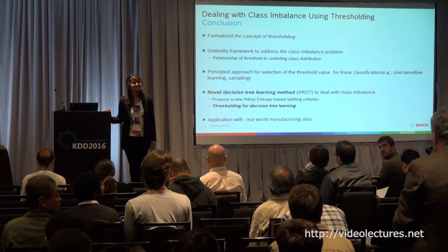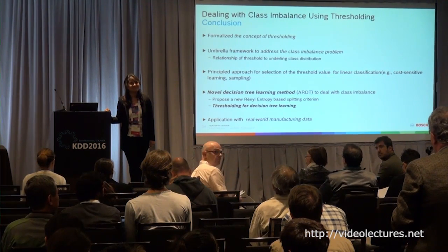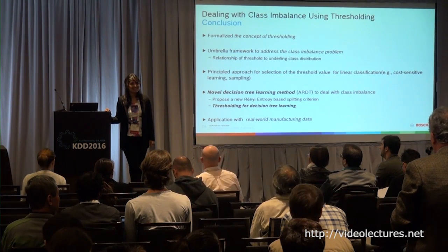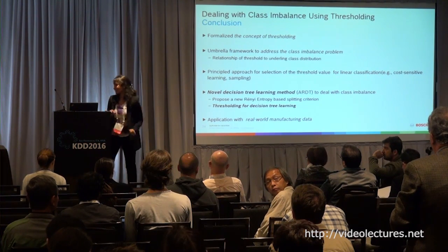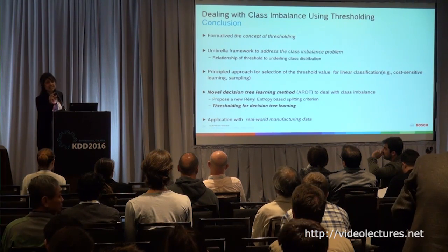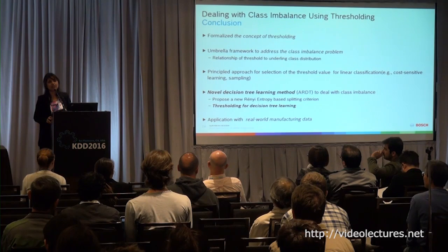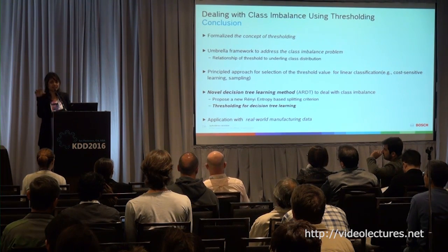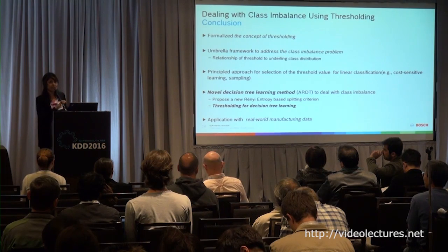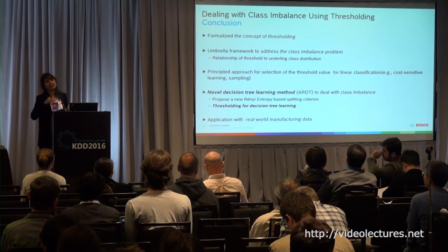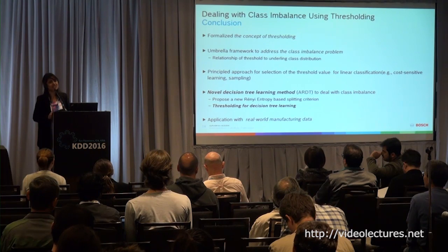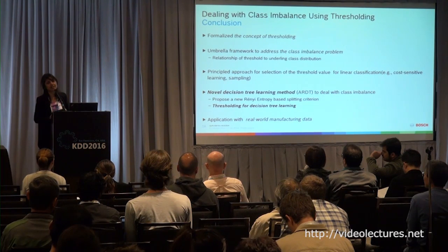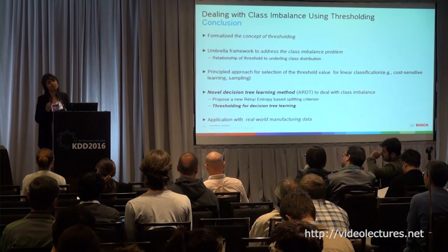An audience member commented: for class imbalance, we don't use accuracy as a performance measure — that's one thing. And second, thresholding is not a new concept. The speaker responded: when we talked about accuracy, we were talking about accuracy for the imbalanced class — the particular scrap — which was the KPI the manufacturing people themselves used. And the concept of thresholding, of course, is not new, but what we proposed is specific to decision trees — how you tune decision trees based on alpha, the Renyi entropy tunable parameter.